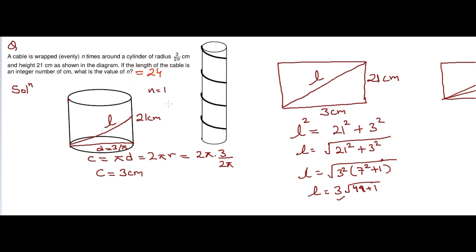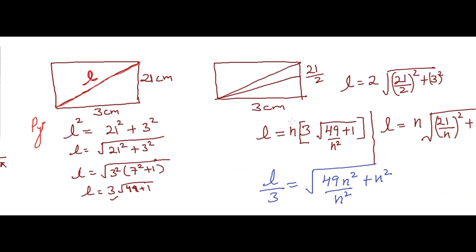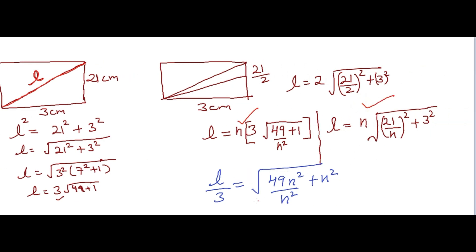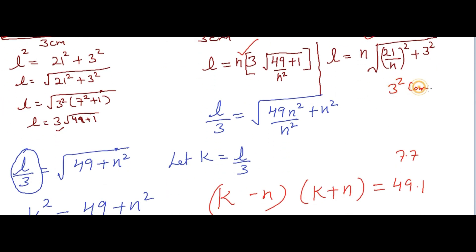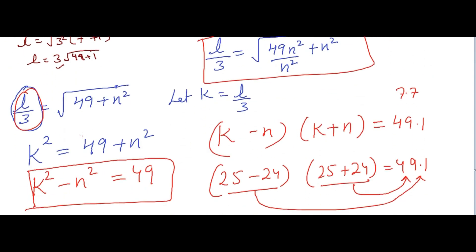Let me recap: we unfolded a single turn into a rectangle, with the wire as the hypotenuse. Using the Pythagorean theorem we generalized for n turns — more turns means the height per turn decreases proportionally. After simplification we obtained k² − n² = 49. Applying the difference of squares formula and factoring 49, we found k = 25 and n = 24, giving l = 75 cm, which is an integer.